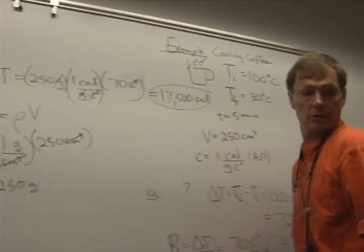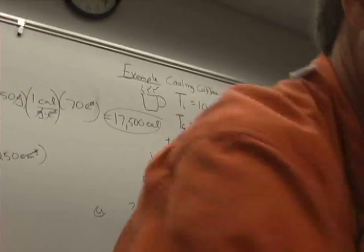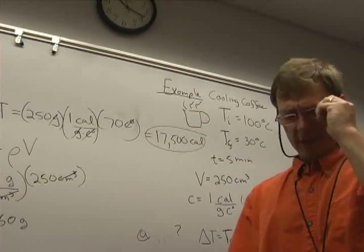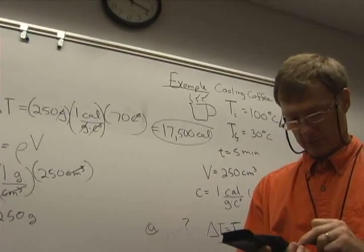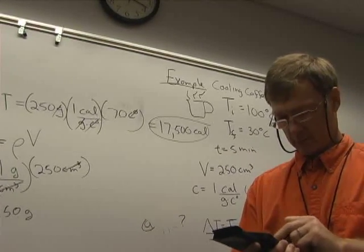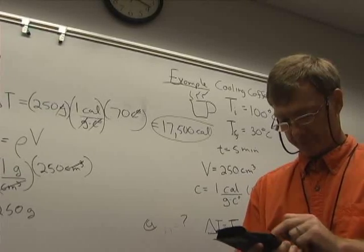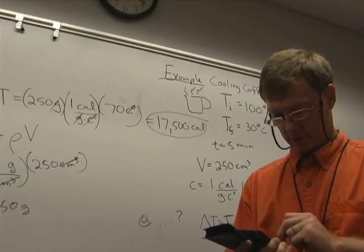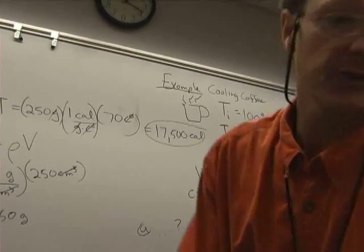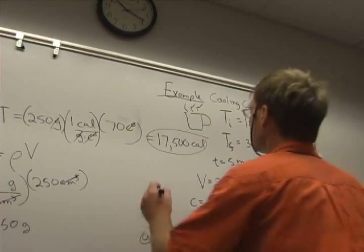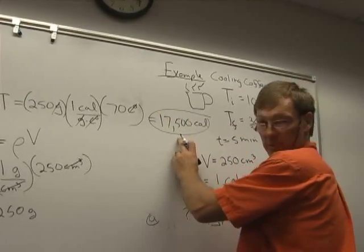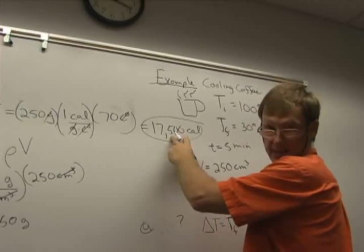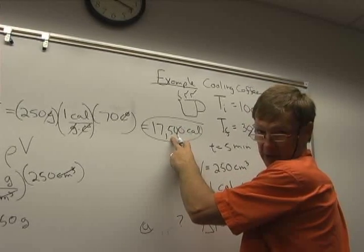Check that, 250 times 70. Yeah, 17,500 calories. So that's the energy that's emitted. And remember, these aren't food calories. The food calories are 1,000 of these, so this would be 17 and a half food calories lost as it cools.